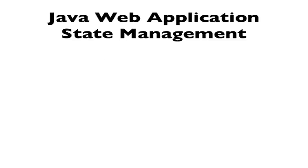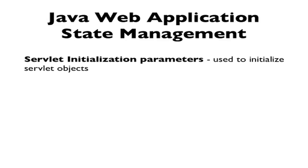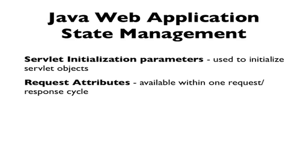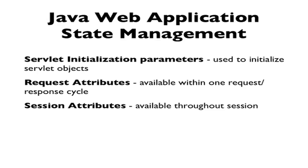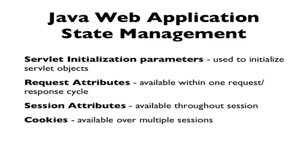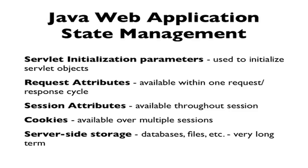In this set of videos, we're going to look at some Java web application state management techniques. These will include servlet initialization parameters, used to initialize servlet objects and may persist as long as the servlet survives. Request attributes are available within one request-response cycle. For slightly longer persistence, we might use session attributes, which are available throughout a session — a session begins with the first request from a client and ends once the client is no longer visiting our application. Cookies can be available over multiple sessions. And finally, for long-term persistence, we'll have server-side storage such as databases and files.